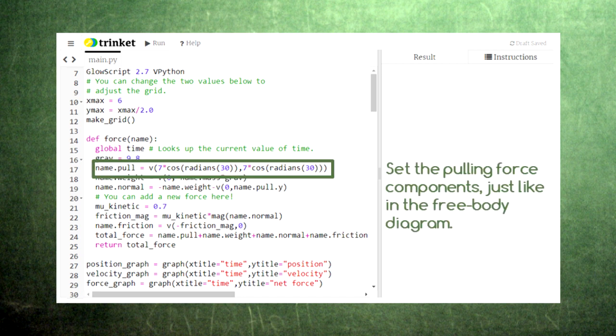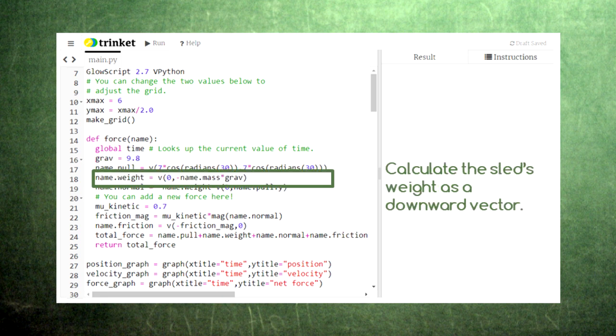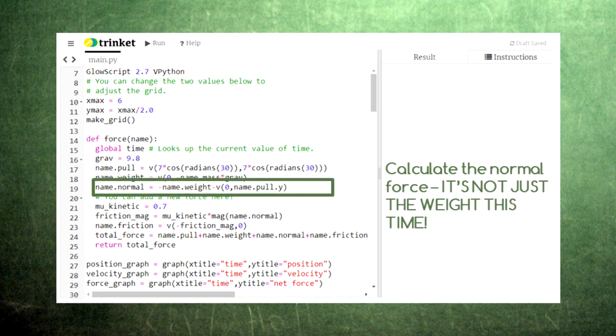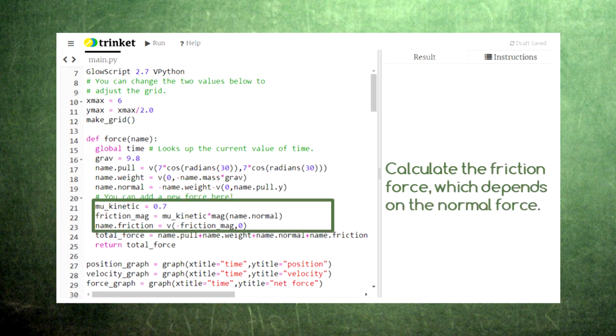Here, we implement the x and y components of the pulling force. Let's start with a pulling force of magnitude 7 and angle 30 degrees. Then, we calculate the sled's weight vector, pointing down as always. Then, we calculate the normal force between the ground and the sled, using the difference between the weight vector and the y component of our pulling force. Finally, we calculate the force of friction based on the coefficient of kinetic friction and the magnitude of the normal force.